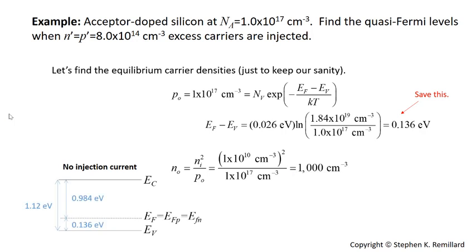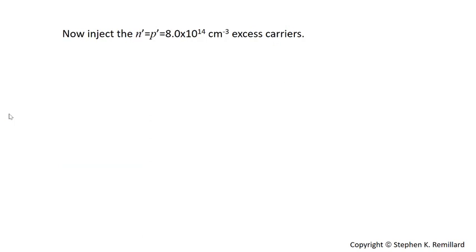And we can also calculate the electron carrier concentration from the equilibrium condition. Okay, because I'm just asking for the moment what's going on at equilibrium. Look at that. You get a thousand. N sub i is always 10 to the 10th for silicon. So you get a thousand per cubic centimeter. It's a lot, lot, lot, lot, lot smaller than the hole carrier concentration. You could calculate the Fermi energy relative to the conduction band and you get 0.984 if you wanted to. But just use 1.12 minus 0.136 to get 0.984. That's what the energy band levels are, the energy band diagram, before we've begun injecting this excess carriers.